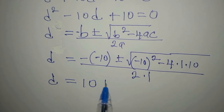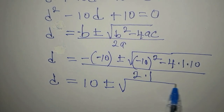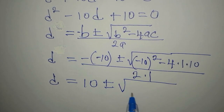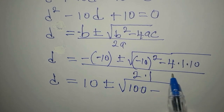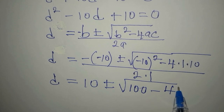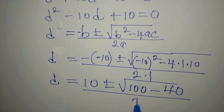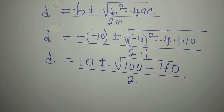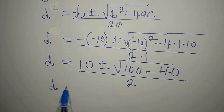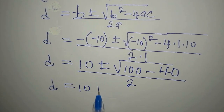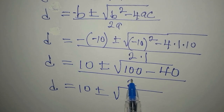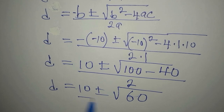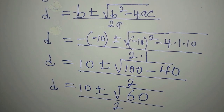Continuing: we have negative 10 squared which gives 100, minus 4 times 1 times 10 which gives 40, all divided by 2 times 1 which is 2. So d equals 10 plus or minus the square root of 100 minus 40, which is the square root of 60, divided by 2.